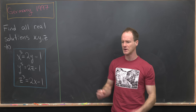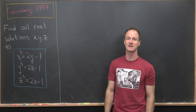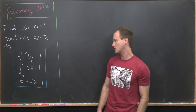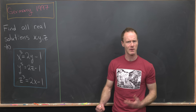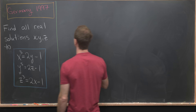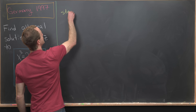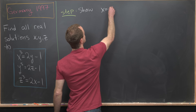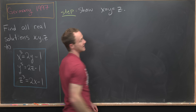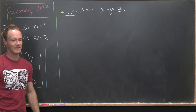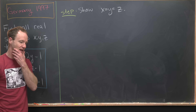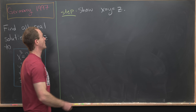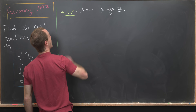What would be a really symmetric type of solution? Well, that would be if x were equal to y were equal to z. If we have that, we can just look at one of these equations and probably solve it pretty easily. So that's maybe going to be our step one: to prove that guess, which is that x equals y equals z.